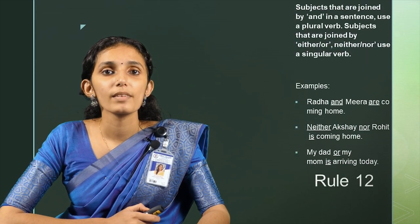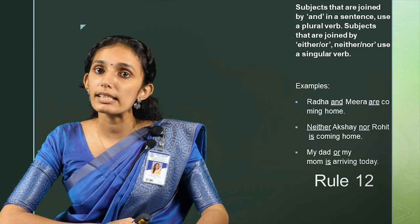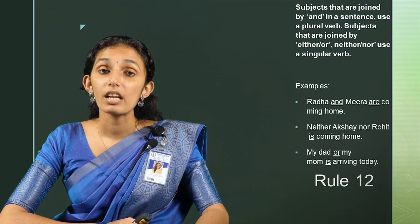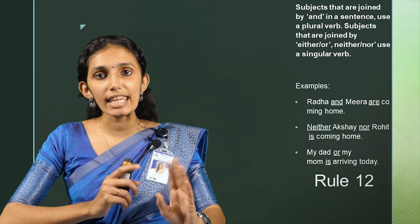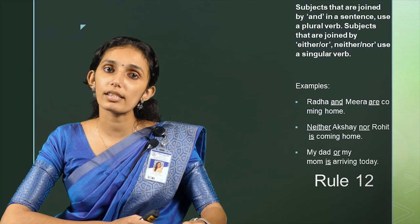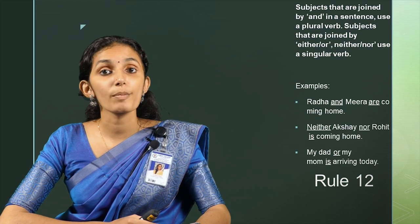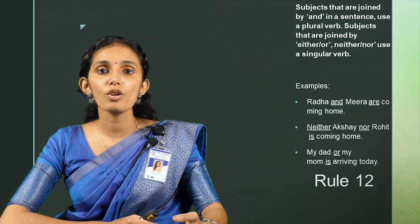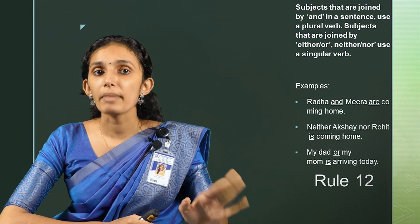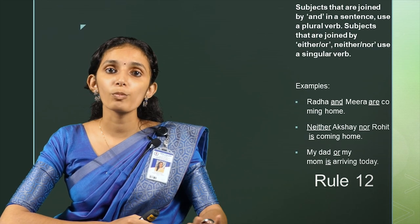Rule number 12: Subjects joined by AND use a plural verb. Subjects joined by 'either...or' or 'neither...nor' use a singular verb. For example, 'Radha and Meera are coming home'; 'Neither Akshay nor Rohit is coming home'; 'My dad or my mom is arriving today.' We have 12 more concord rules which will be discussed in the upcoming session. Stay safe and healthy until then. Thank you.